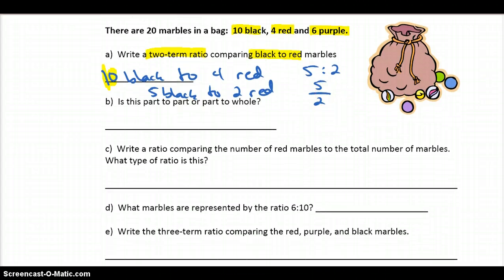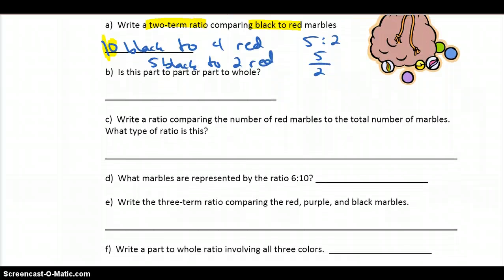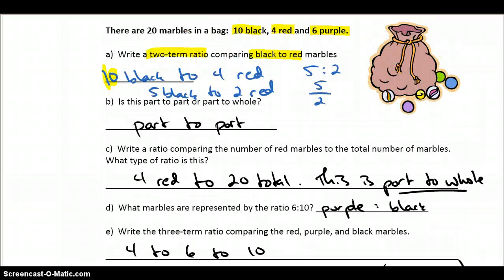Or we could rewrite that in a different notation, right? 5 to 2 in the relation notation using the colon. 5 over 2 in the fraction notation. Any of those are acceptable. So why don't you go ahead and pause the video here, if you're tracking with me. And try B, C, D, E, and F. And then take a look again and see if you got what I got here. Alright, here we go. So the ratio we just wrote there was a part-to-part ratio, right? We're comparing black to red. So it would be part-to-part.